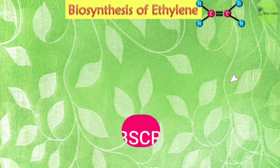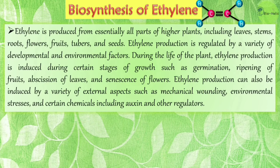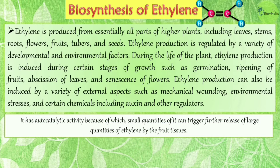Moving to the biosynthesis of ethylene: ethylene is produced from essentially all parts of higher plants, including leaves, stems, roots, flowers, fruits, tubers, and seeds. Ethylene production is regulated by a variety of developmental and environmental factors. It is induced during germination, ripening of fruits, abscission of leaves, and senescence of flowers. It can also be induced by mechanical wounding, environmental stresses, certain chemicals including auxin, and other regulators. Ethylene has autocatalytic activity — small quantities of ethylene can trigger the release of large quantities by fruit tissues.